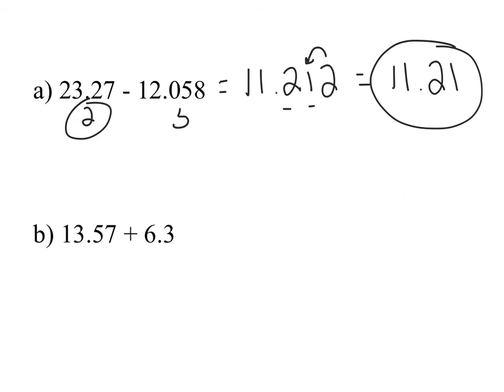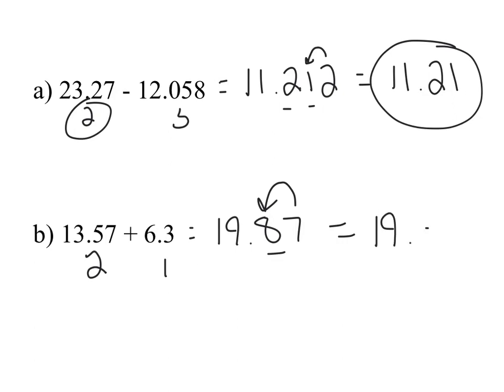For example B, one number has two decimal places and the other has one, so the answer can only have one decimal place. Computing 13.57 + 6.3 gives 19.87. I'm only allowed one decimal place, and the 7 rounds it up, so my answer is 19.9.